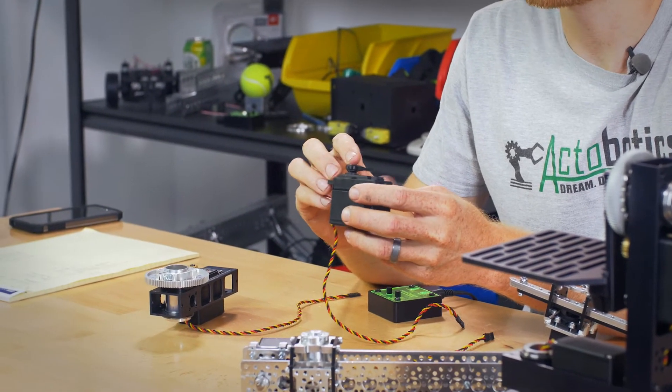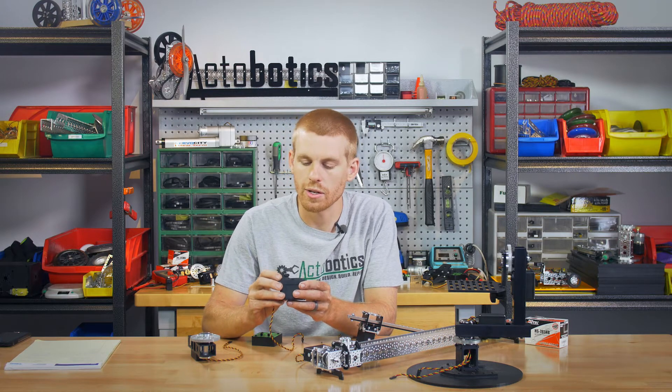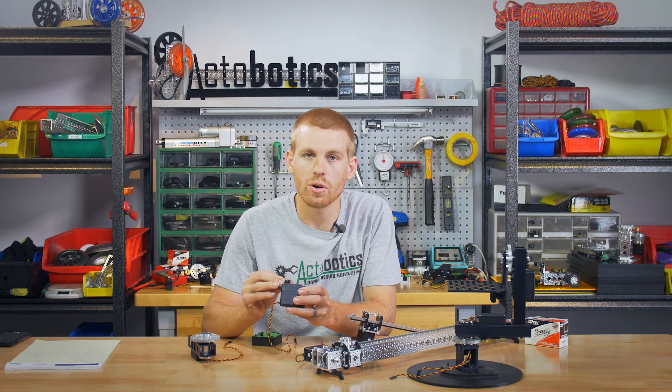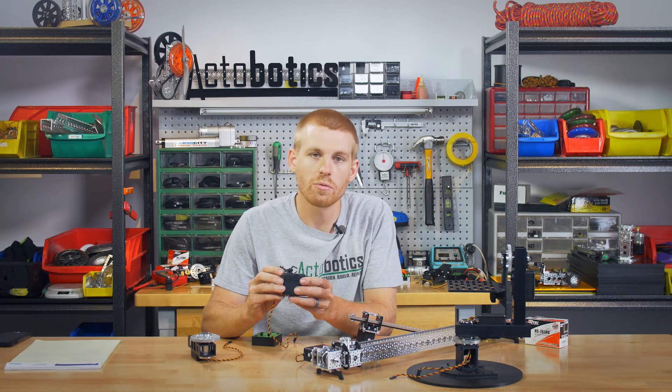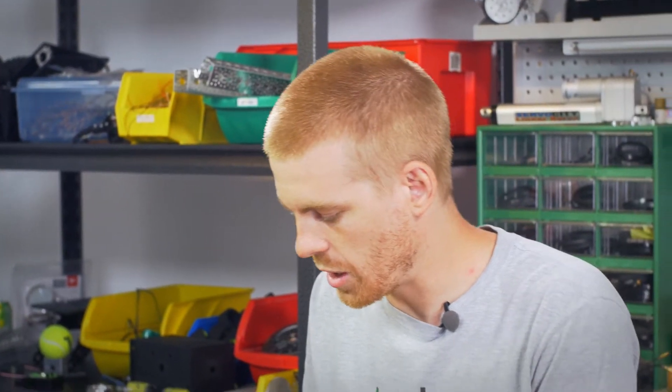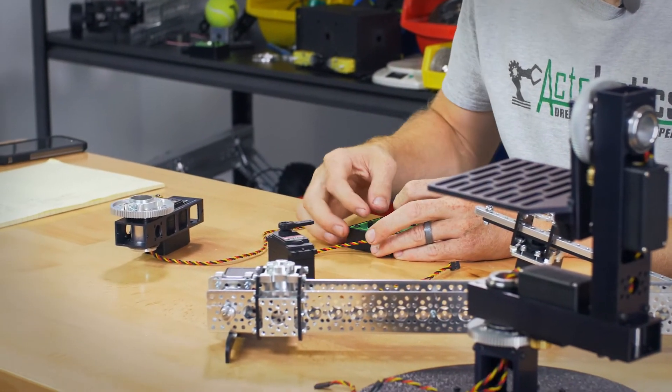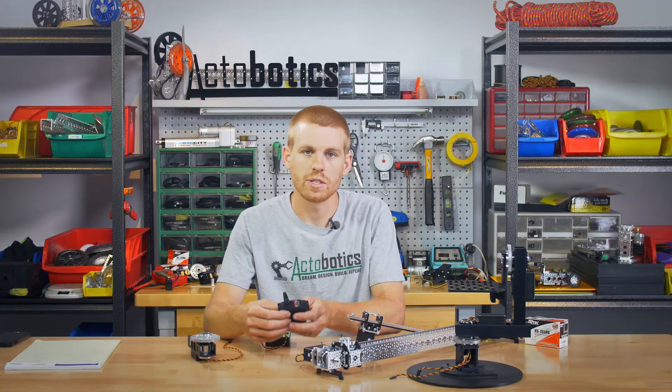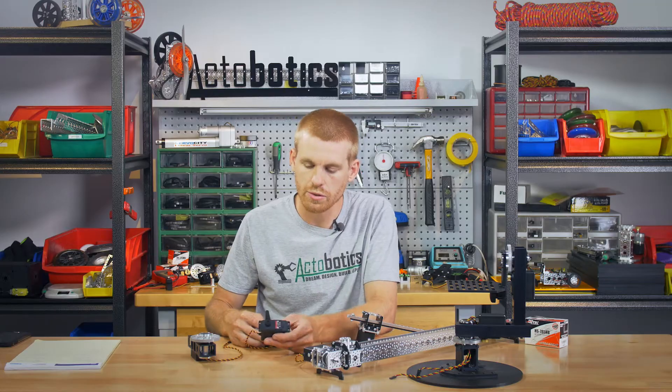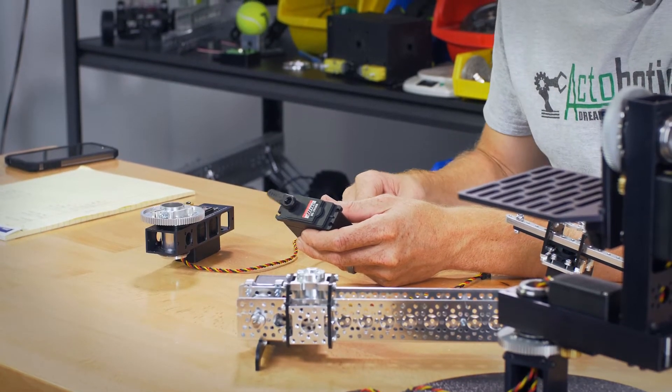So most servos rotate about 90 degrees with a standard PWM signal, or 180 degrees with a 600-2400. This can rotate about 4.25 rotations with a standard 1050-1950 microsecond signal, like what I have on the dual servo driver here. Or it can actually rotate about 8.5 turns if you send a 600-2400 signal, say if you're using a microcontroller like an Arduino board.